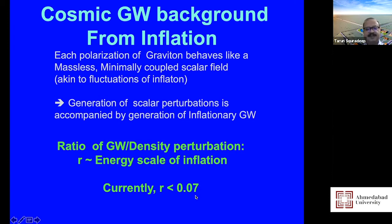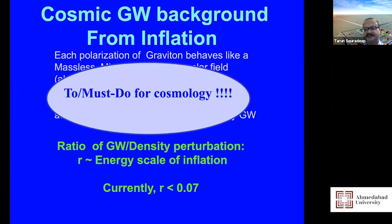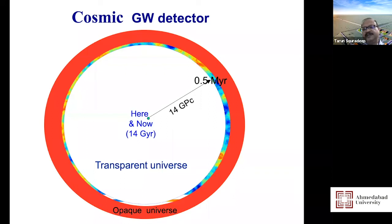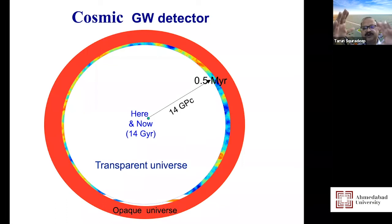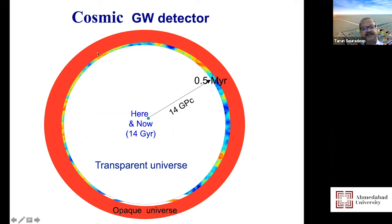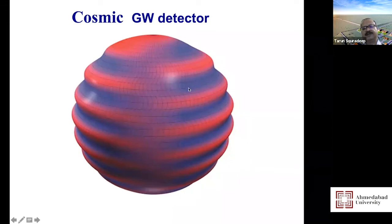We want to go down to a tensor-to-scalar ratio r of about 10^{-3} and check it out — a must-do for cosmology. To do this we need to peer at the microwave background with more sensitivity. Embedded in the CMB is this: if there are gravitational waves generated in the early universe, they would distort this entire sphere of last scattering — just like LIGO gravitational waves distort the positions of mirrors by 10^{-18} meters, here the distortion is at the level of 10^{-8}.